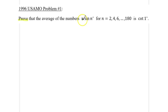So we have, we would like to compute the average of basically 90 numbers of this form for n taking even values and show that this average is simply equal to cotangent 1.